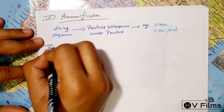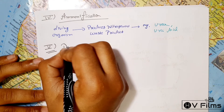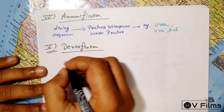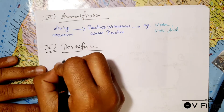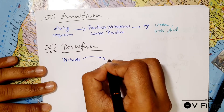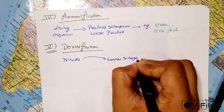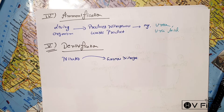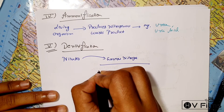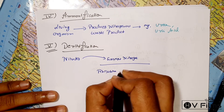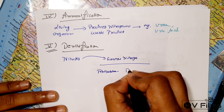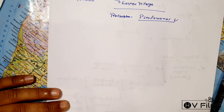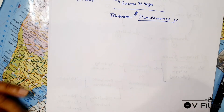The final stage is denitrification. This is the stage where nitrates convert back to gaseous nitrogen. The bacteria mainly responsible for this is pseudomonas, which converts the nitrogen back into the atmosphere. Remember this name as it is important from an exam perspective.